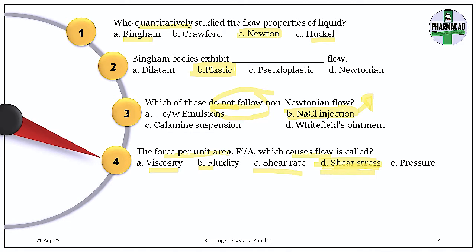Fluidity and viscosity: if the fluid exhibits resistance to flow that is viscosity, and the ease or ability of a fluid to flow is called fluidity. The answer is shear stress. Shear stress is applied tangential to the surface, while pressure or compression is applied perpendicular to the surface.